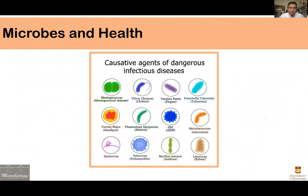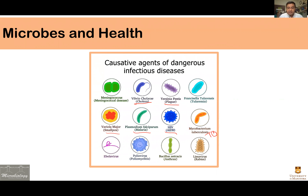Bacteria play a very important role in our lives — on our body, in our body, and outside. However, a small proportion of bacterial types impact our health negatively. A number of species can cause serious infections — diseases like cholera, plague, malaria, smallpox, HIV/AIDS, or TB — all caused by microorganisms. When we get sick from a bacterial infection, we take antibiotics for treatment, usually for 7 to 10 days, and we get better.